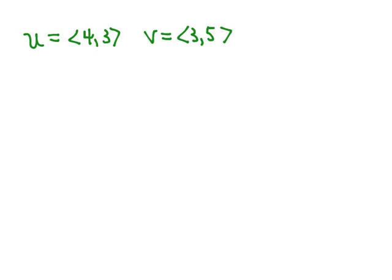We have that u in component form is the vector 4, 3 and v in component form is 3, 5. And we want to find the angle between u and v.